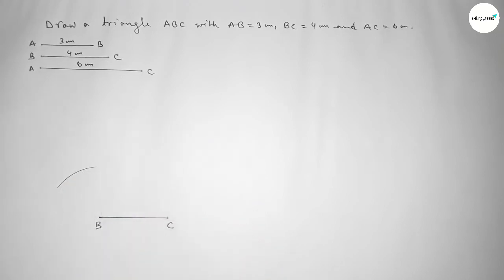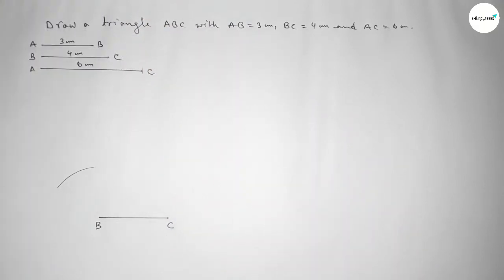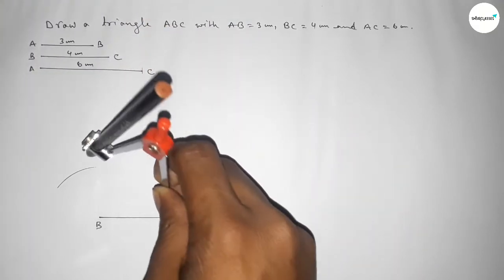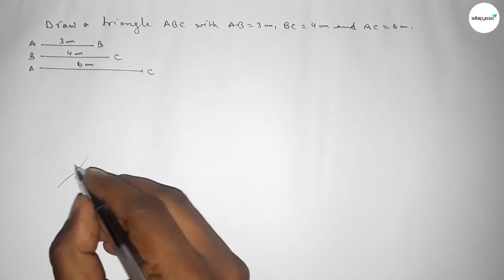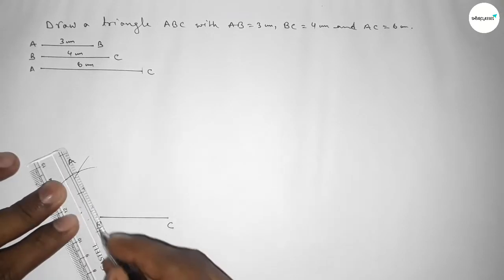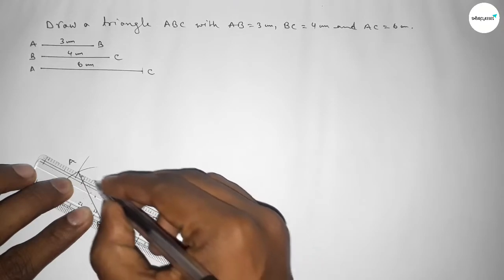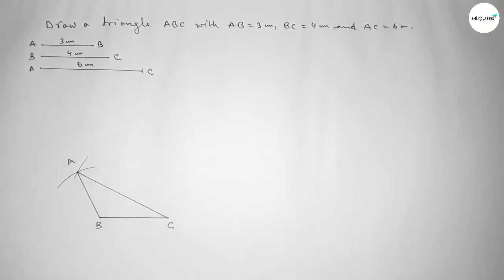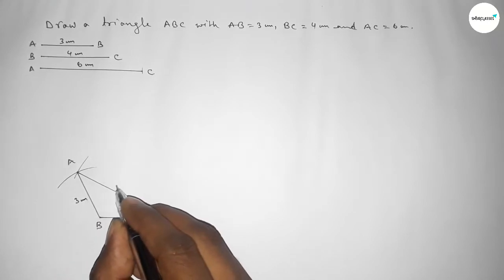Now taking the length AC equal to 6 centimeter, placing the compass at point C and drawing an arc to cut the first arc. Both curves intersect at a point — we take that as point A. Now joining A and B, then joining A and C, to get the triangle. This side is 4 centimeter, this side is 3 centimeter, and this side is 6 centimeter.